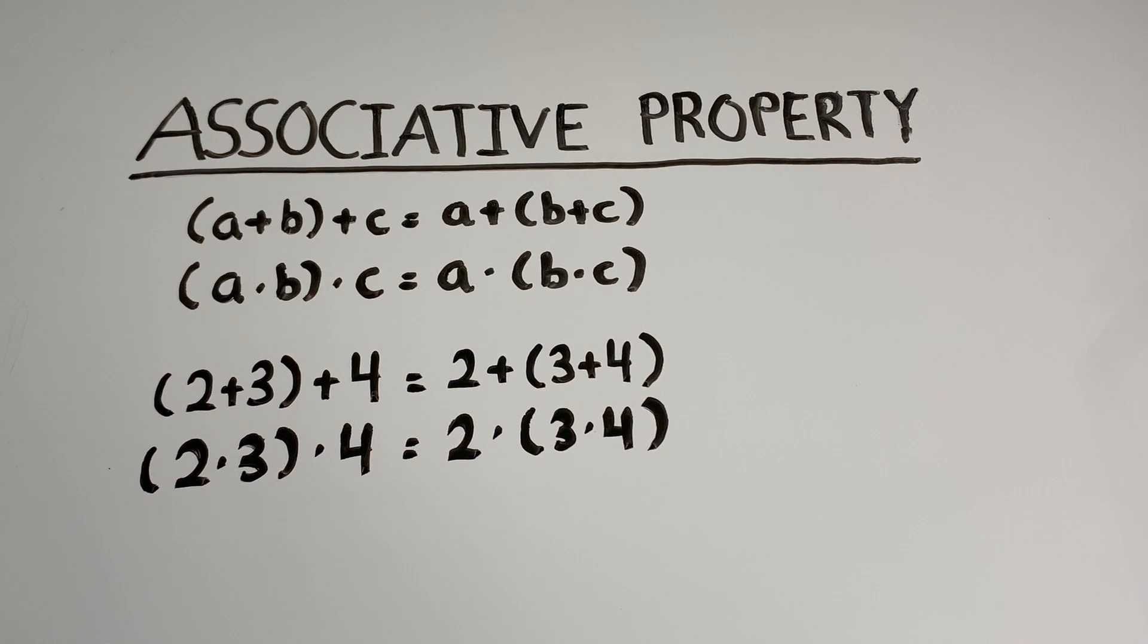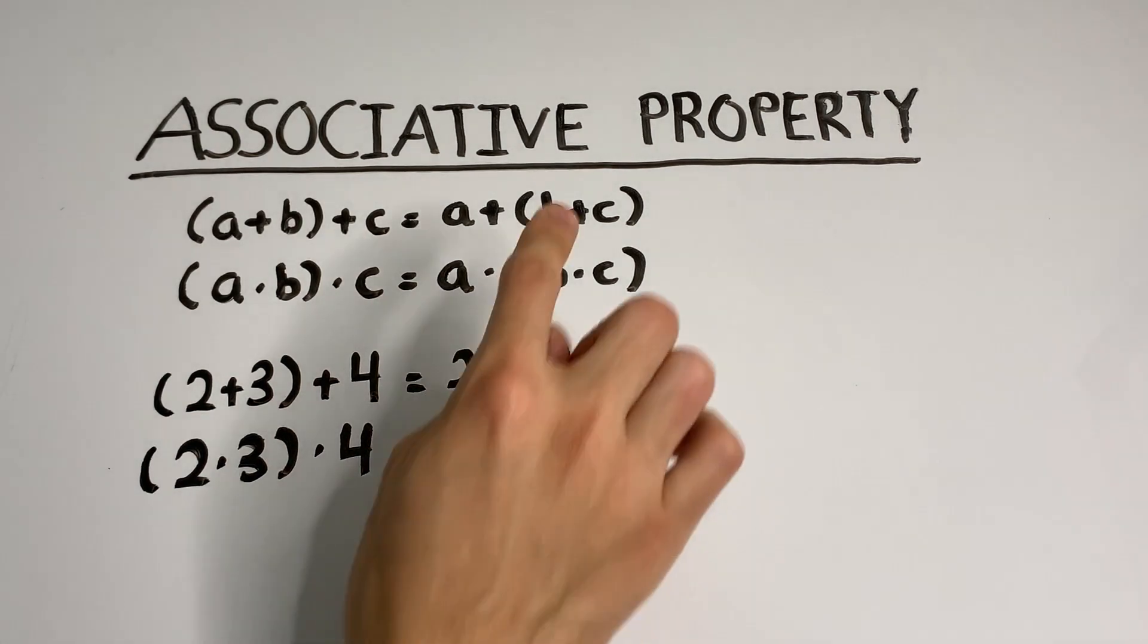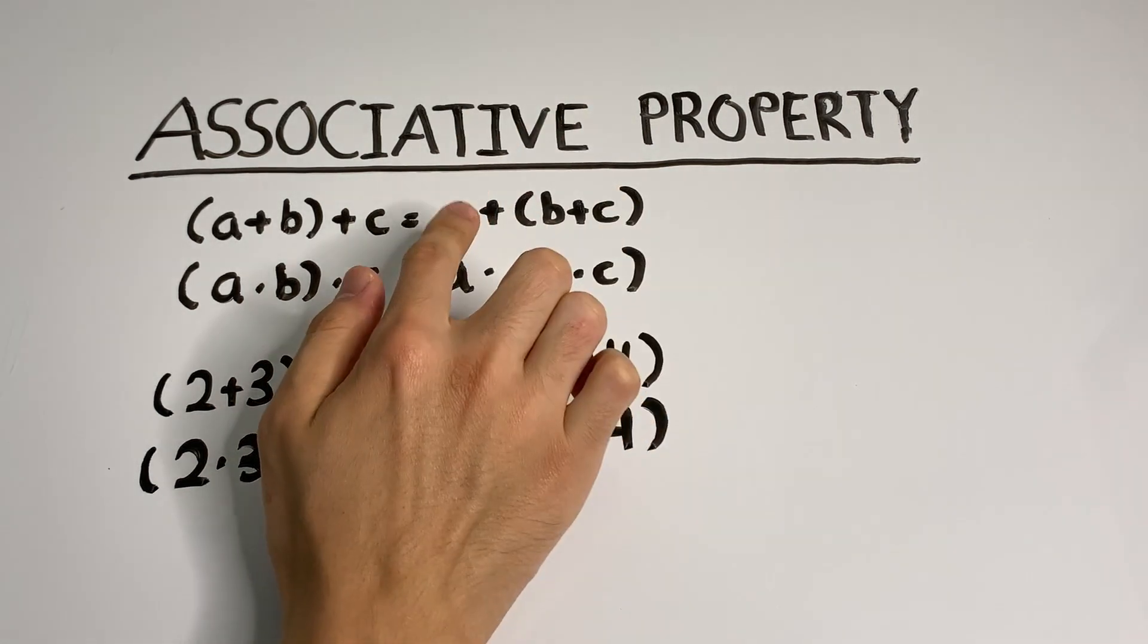Now let's talk about the associative property. The associative property for addition tells us that for any three numbers a, b, and c, it doesn't matter in which order we add them up. We can add a and b together first and then add c afterwards. That'll give us the same result if we add b and c together first and then add a afterwards.